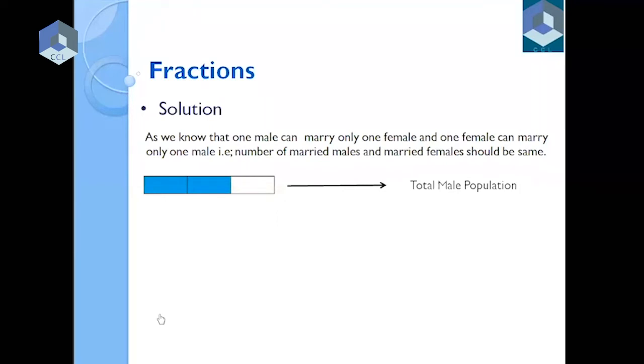Now, the main point is that the number of married males must equal the number of married females, because one male will marry one female. So I have to make the bar for married males equal to the bar for married females. Because these two numbers are equal, the numerator parts are equal.